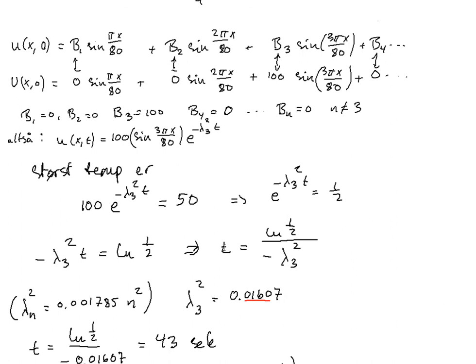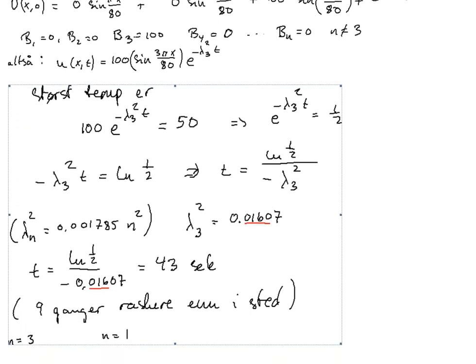So in this case, we find that T is equal to, in order to find the largest temperature, we do exactly as above. We find that T is the logarithm of 1 half divided by minus lambda 3 square. And now that we know lambda 3 square, we can find this temperature T. And it's in this case equal to 43 seconds.